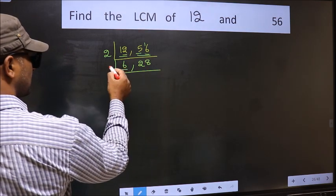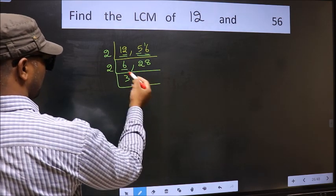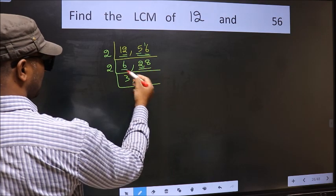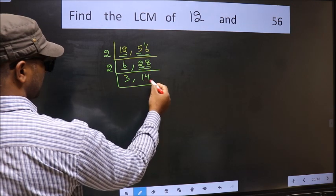Now here we have 6, 6 is 2×3 is 6. Now the other number 28. First number 2, when do we get 2 in 2 table? 2×1 is 2. The other number 8, when do we get 8 in 2 table? 2×4 is 8.